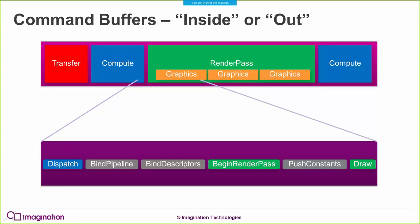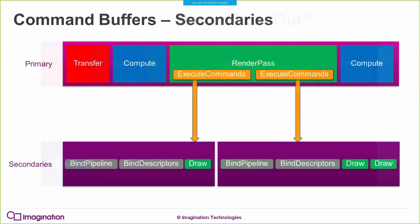Graphics commands are special because they have to go inside a render pass - and the opposite is true: non-graphics commands are not allowed inside a render pass at all. Andrew will be covering exactly what render passes are. Another limitation is that render passes must be contained within one command buffer - you can't begin a render pass in command buffer A and end it in command buffer B. You might think this is a severe limitation, since the way to exploit multiple threads is through multiple command buffers. The answer to this is secondary command buffers.